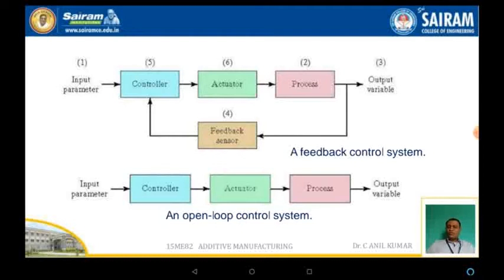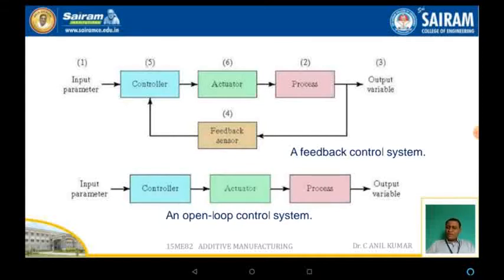In this slide, two block diagrams are represented. One is the open loop control system and the other is the feedback control system. The feedback control system is also called the closed loop control system. In the closed loop system, the essential elements are: the input parameter, the controller, the actuator, the process, the output variable, and the feedback sensors. In the case of an open loop control system, only five elements are sufficient: the input parameter, the controller, the actuator, the process, and the output variable.